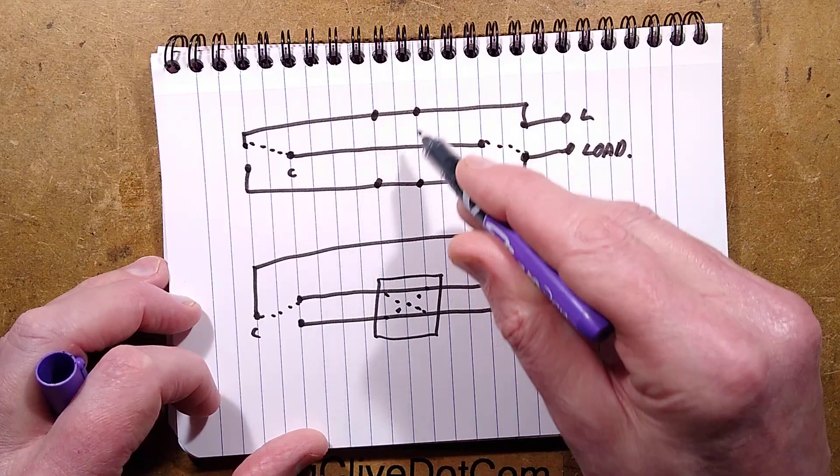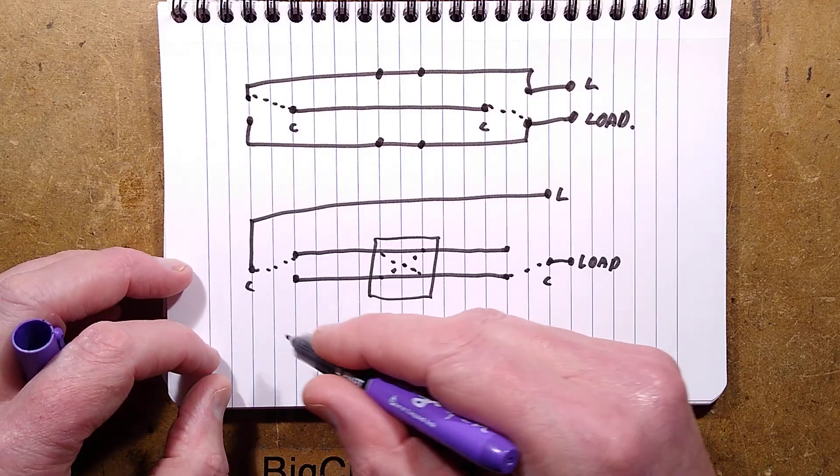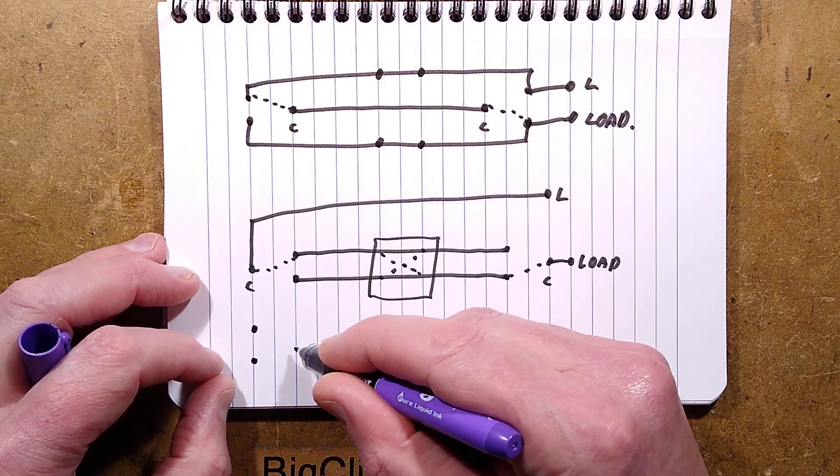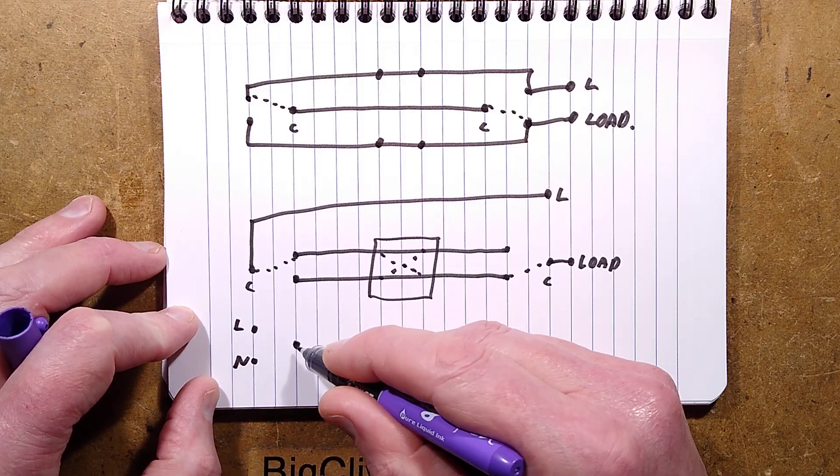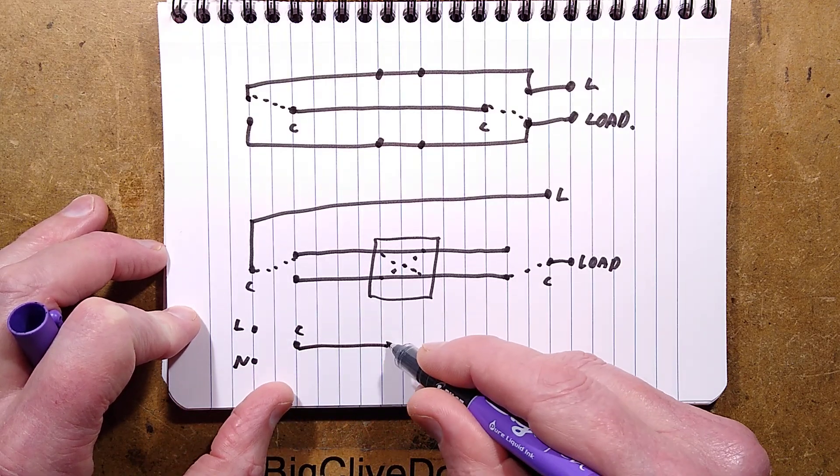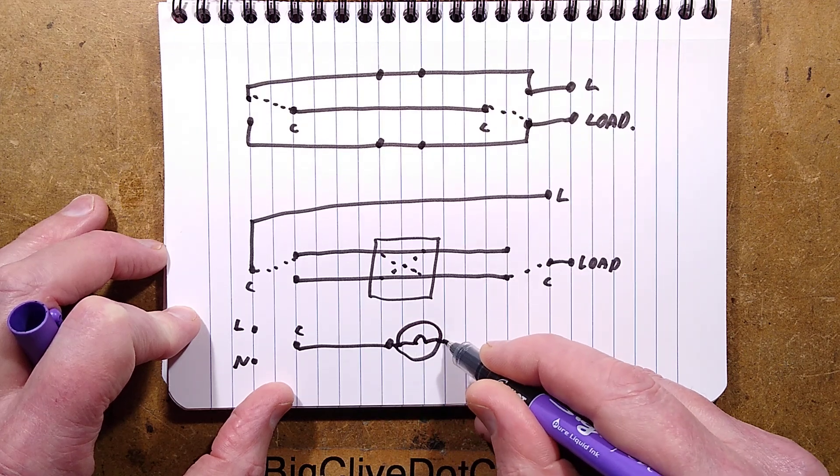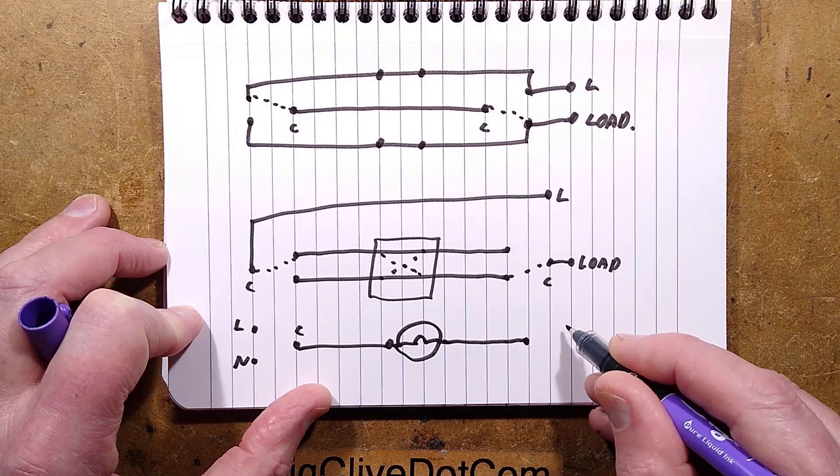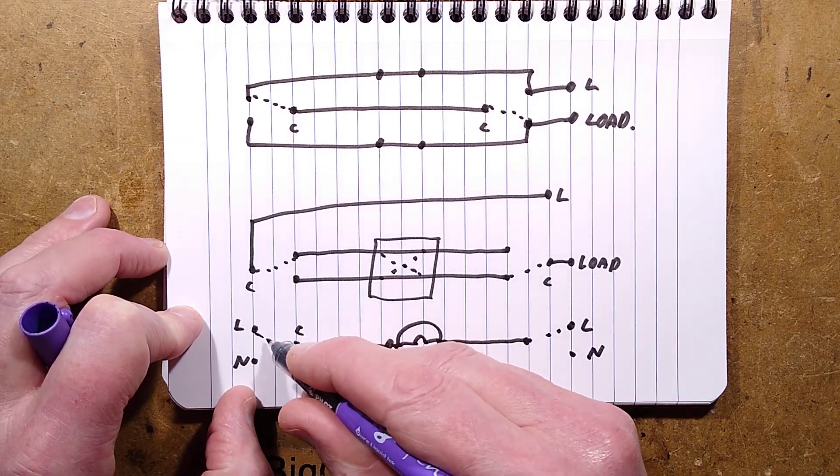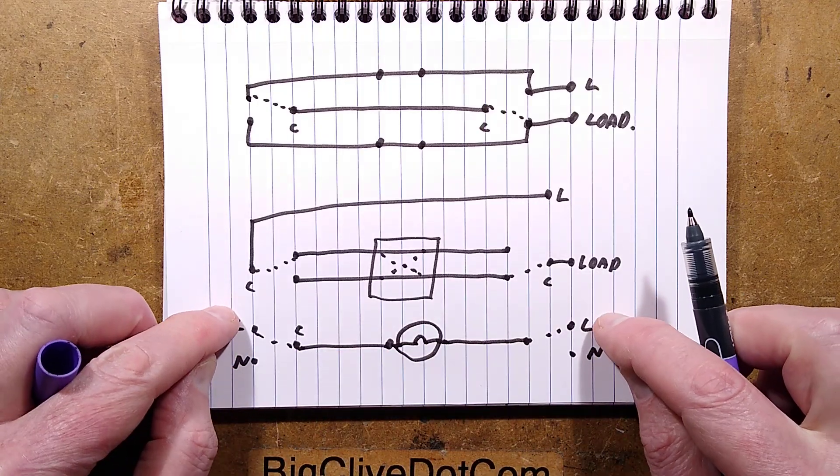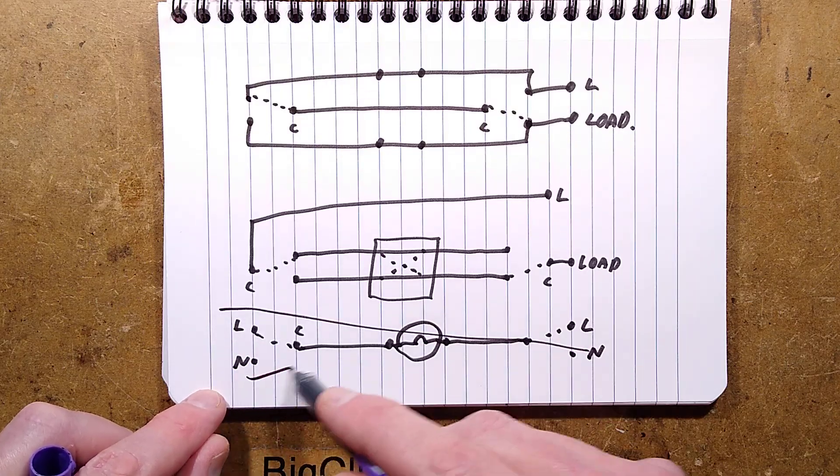The completely non-compliant way - and don't do this - is that in some countries they'll have live and neutral on the L1 L2, and they've got the common connection and then that will go to the light. They go to the other end and they've got live and neutral again. But the downside of this is that if you've got the switches both in the live position, then the light will be off but both connections to the light will be live. This is not compliant in any way but it is done apparently in some other countries.